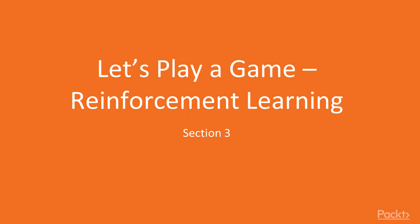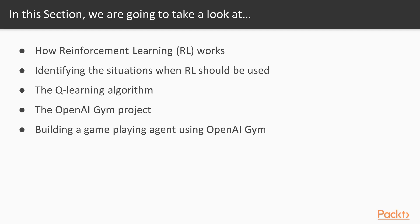Hello, this section is about reinforcement learning, primarily for game playing applications. In this section, we'll introduce reinforcement learning and how it works at a high level. We'll look at when we should use RL and what we need to know to use it. Then we'll look at the popular Q-learning algorithm and move on to practice with RL algorithms using OpenAI Gym Project. Finally, we'll use RL to learn how to play a game, again with the OpenAI Gym.